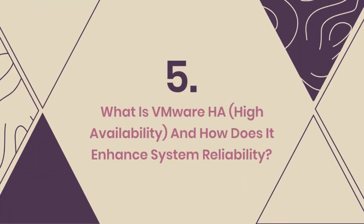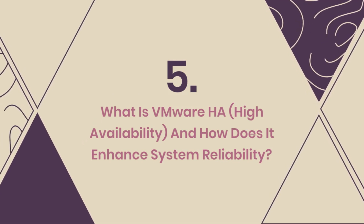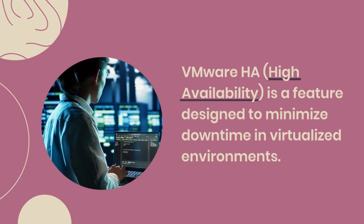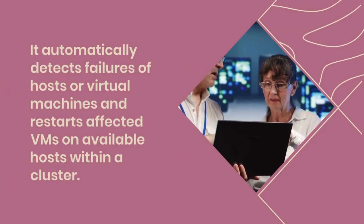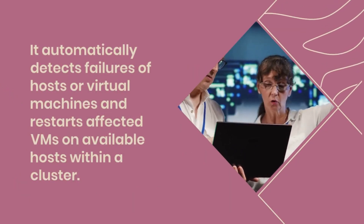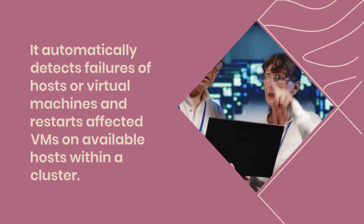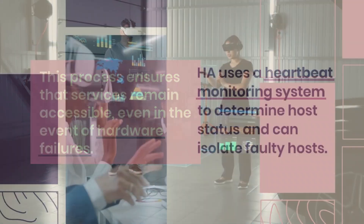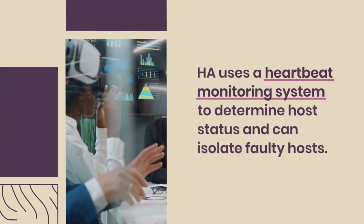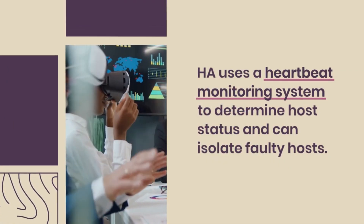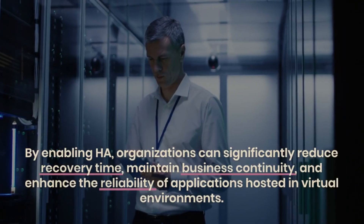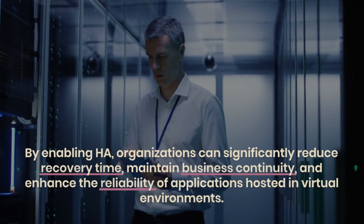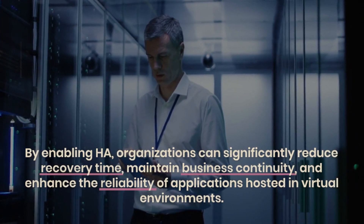Question 5: What is VMware HA (High Availability) and how does it enhance system reliability? VMware HA is a feature designed to minimize downtime in virtualized environments. It automatically detects failures of hosts or virtual machines and restarts affected VMs on available hosts within a cluster. This process ensures that services remain accessible even in the event of hardware failures. HA uses a heartbeat monitoring system to determine host status and can isolate faulty hosts. By enabling HA, organizations can significantly reduce recovery time, maintain business continuity, and enhance the reliability of applications hosted in virtual environments.